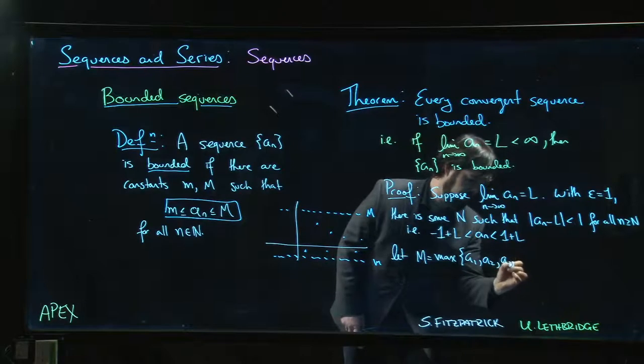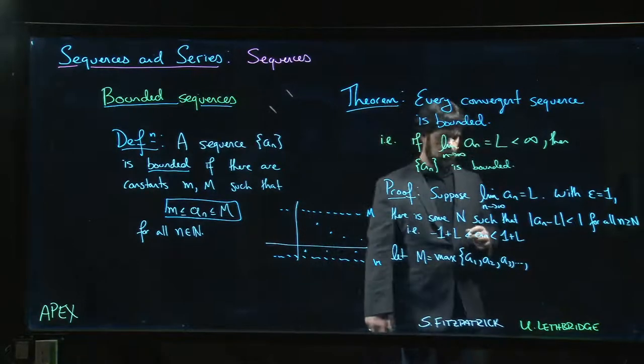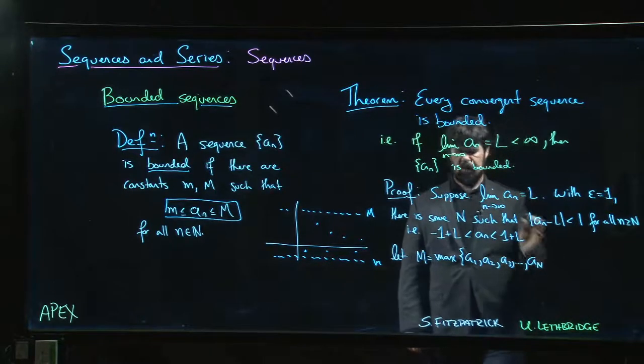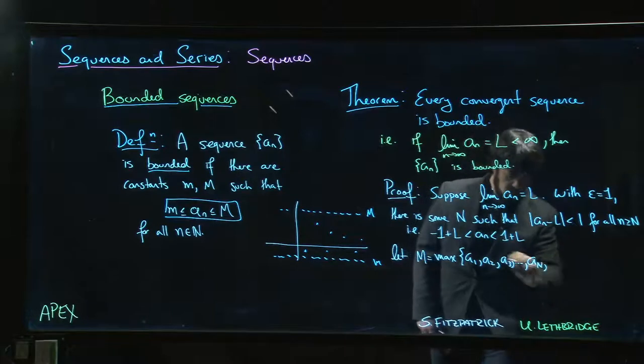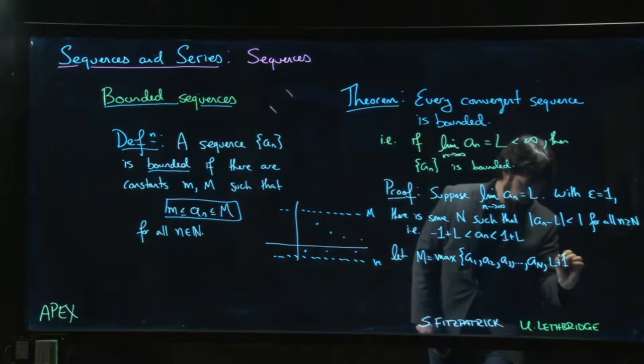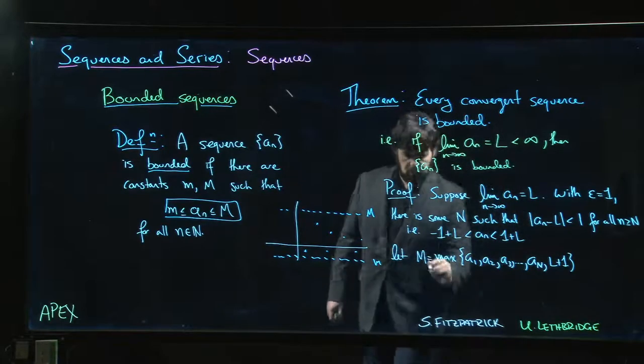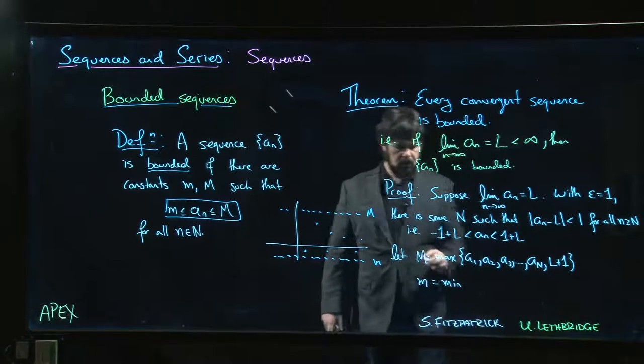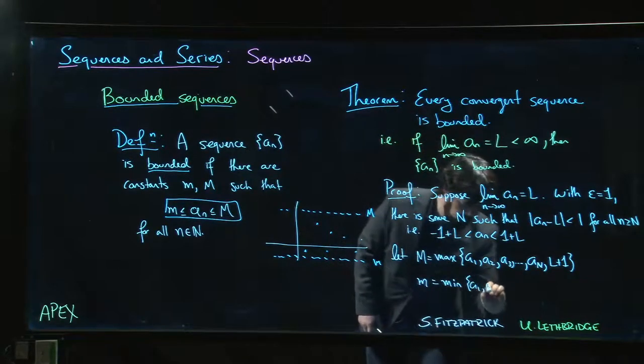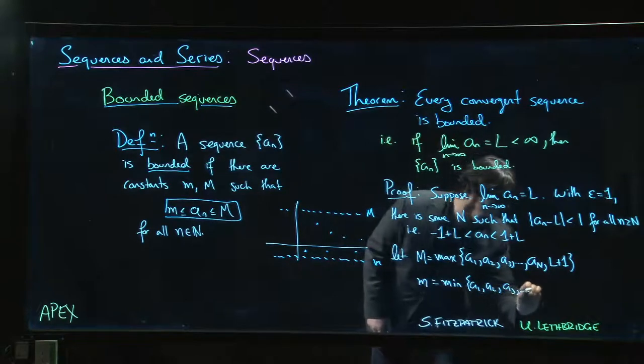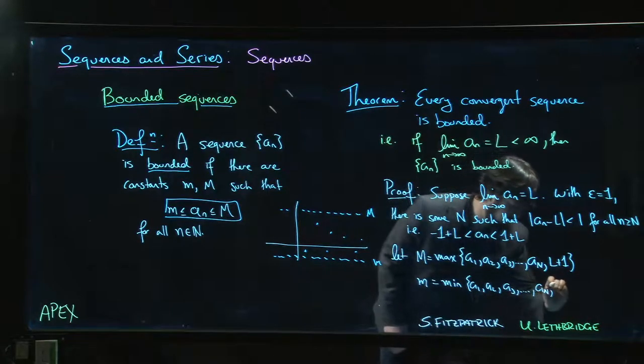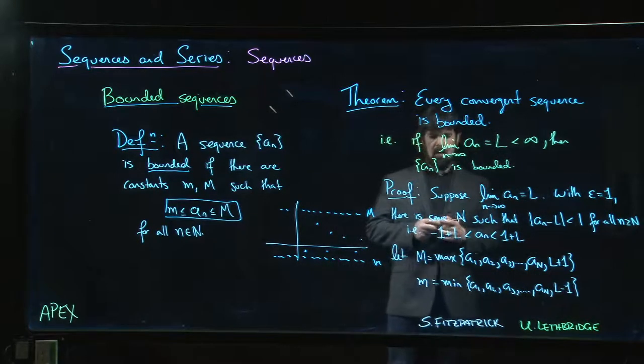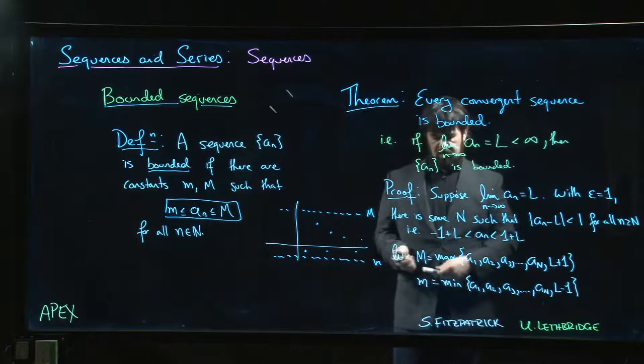a_3, and so on down to a_N, and also we throw in L + 1. And we can let little m be the minimum of a_1, a_2, a_3, down to a_N, and L - 1. Essentially, that's it.